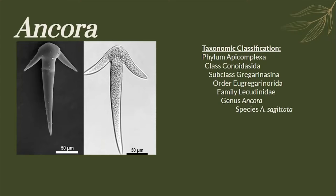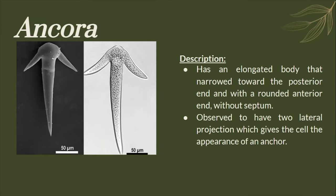The next one is Angcora sagittata. Angcora sagittata is unicellular and is observed to have two lateral projections, which gives it the appearance of an anchor. It has an elongated body that is narrowed towards the posterior end.